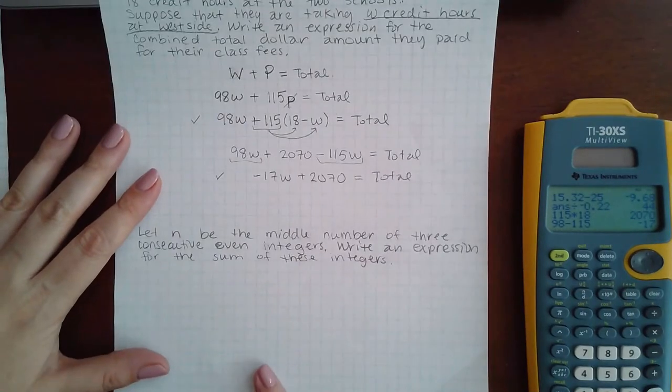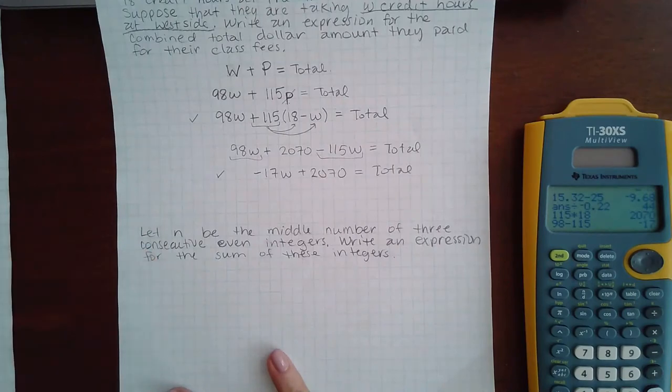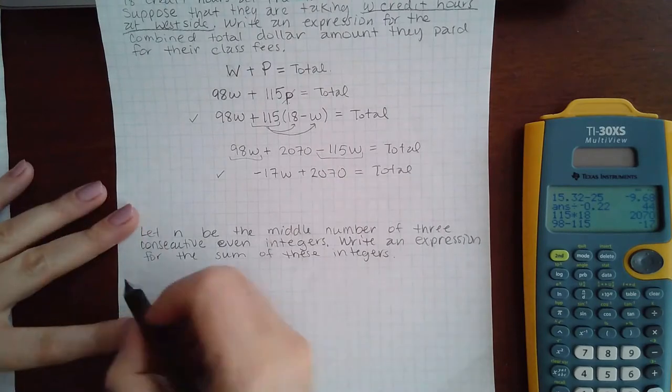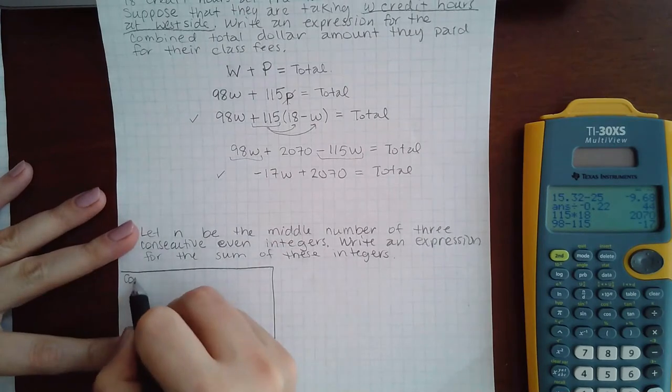Now here we have: let n be the middle number of three consecutive even integers. Write the expression for the sum of these integers. Before I begin this problem, there is something that you need to understand about integers.